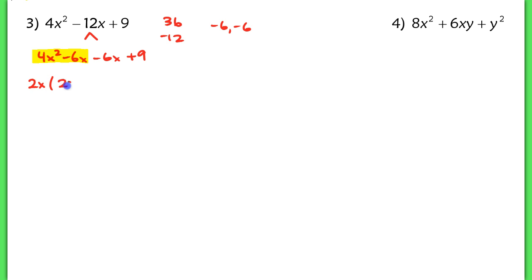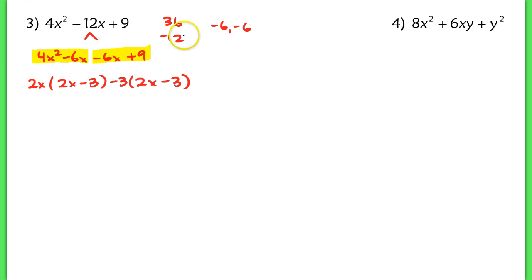Then I look at the GCF of the next two terms. That GCF would be negative 3, so I'm left with 2x minus 3. I can check my work to make sure I'm doing it correctly, because I see the same thing in the parentheses, so I know I'm doing it right. I bring that down once: 2x minus 3.